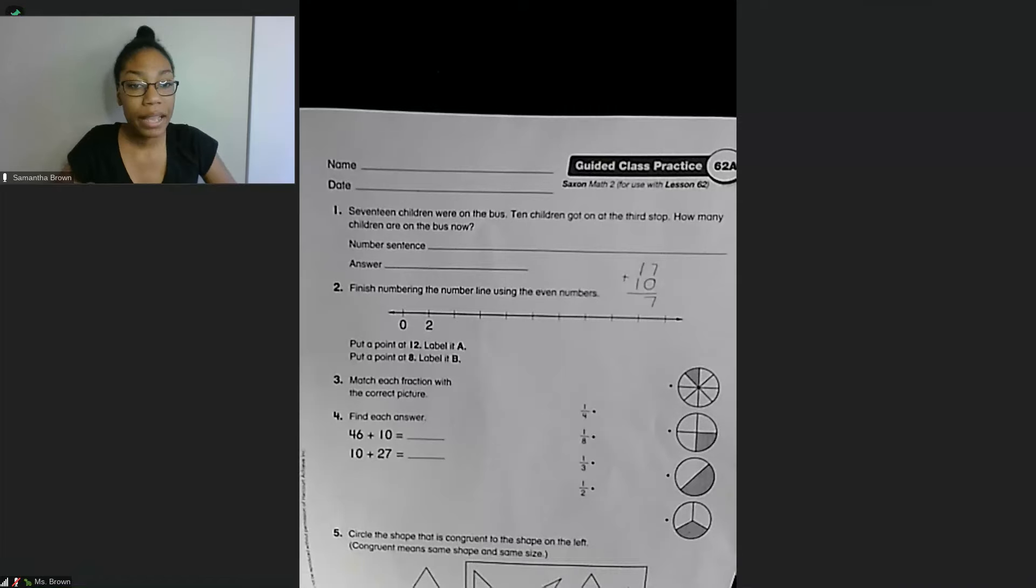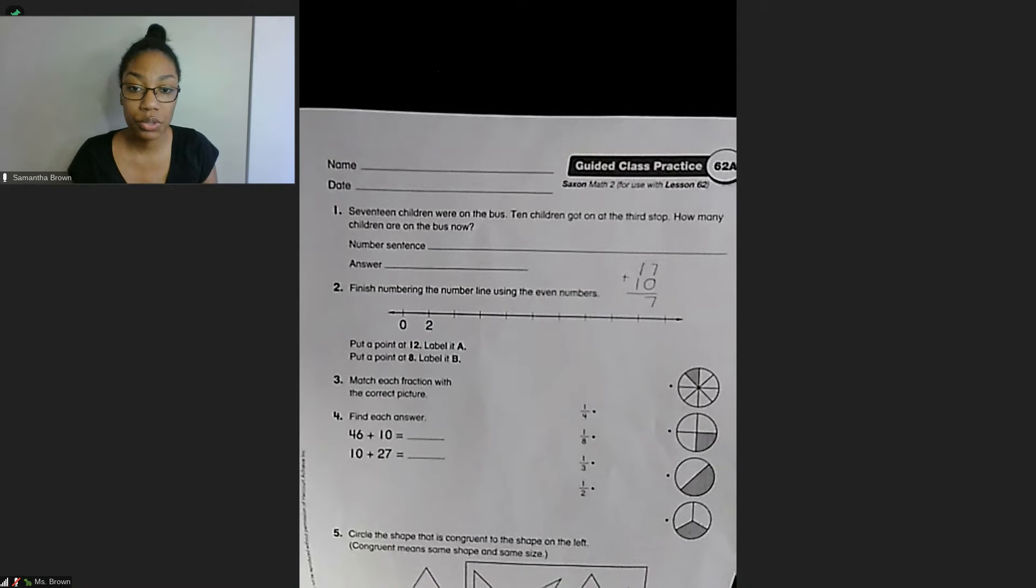Hi guys, I'm back to do Lesson 62. So starting with number one, we have 17 children were on the bus. 10 children got on at the third stop. How many children are on the bus now?